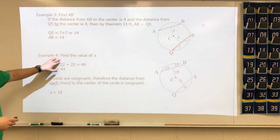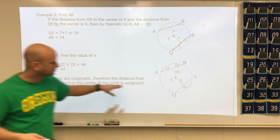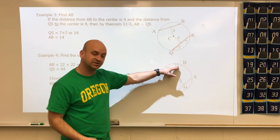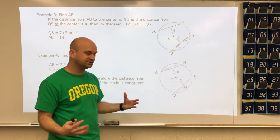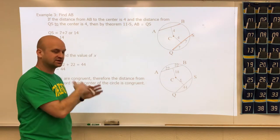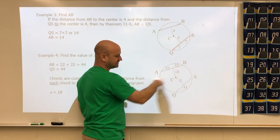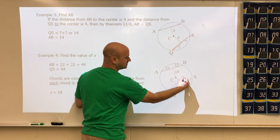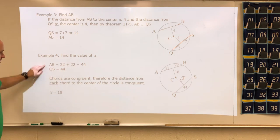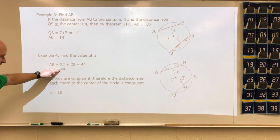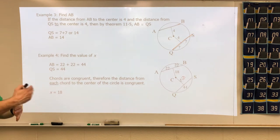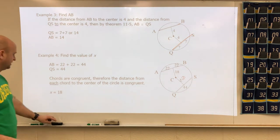In example four, find the value of x. We see this side is 22 and this side is 22, so the whole chord is 44 units. By the same theorem, if this distance is 18, this other distance also has to be 18. So the distance from the chord to the center is 18.